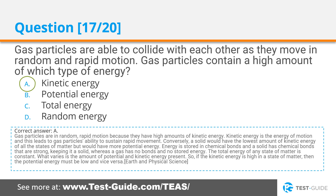Correct answer A. Gas particles are in random, rapid motion because they have high amounts of kinetic energy. Kinetic energy is the energy of motion, and this leads to a gas particle's ability to sustain rapid movement. Conversely, a solid would have the lowest amount of kinetic energy of all the states of matter but would have more potential energy. Energy is stored in chemical bonds, and a solid has strong chemical bonds keeping it solid, whereas a gas has no bonds and no stored energy. The total energy of any state of matter is constant — what varies is the amount of potential and kinetic energy present. If kinetic energy is high, then potential energy must be low, and vice versa.